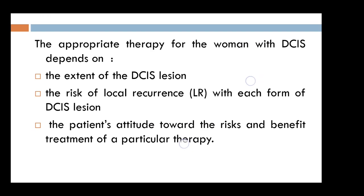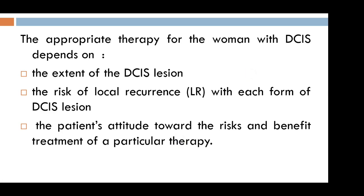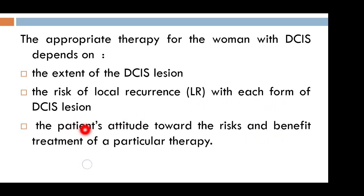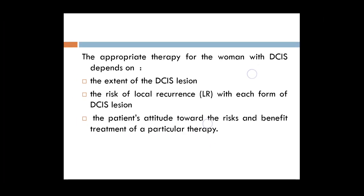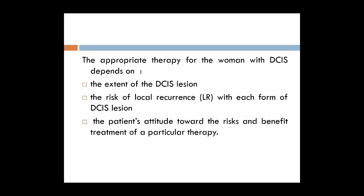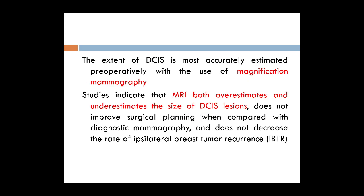The appropriate therapy for DCIS depends on three specific factors: first, the extent of the DCIS lesion; second, the risk of local recurrence with each form of treatment; and third, the patient's attitude toward the risks and benefits of a particular therapy. These three points determine the choice of proper surgical treatment for patients with ductal carcinoma in situ.